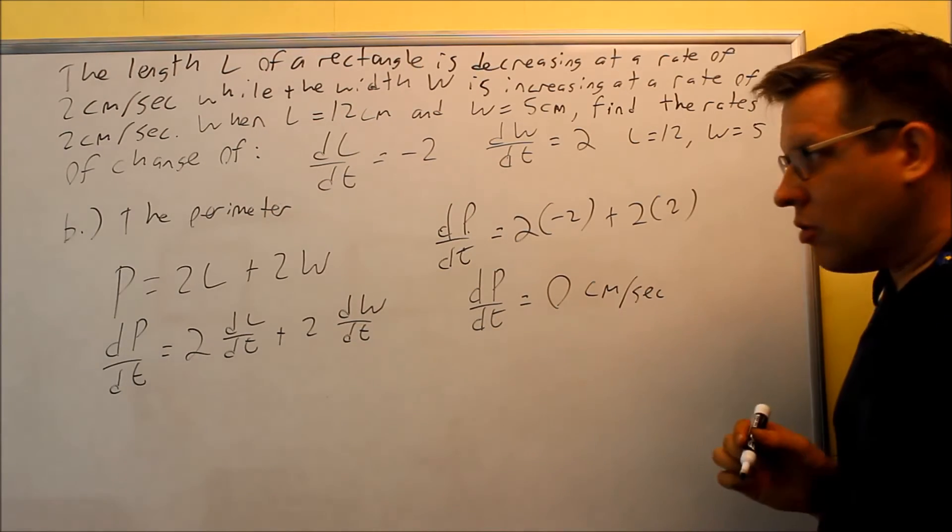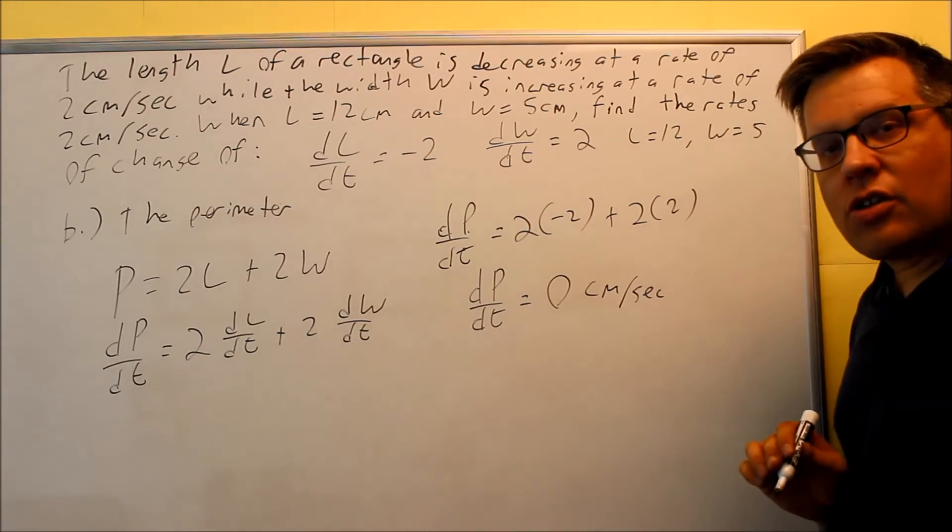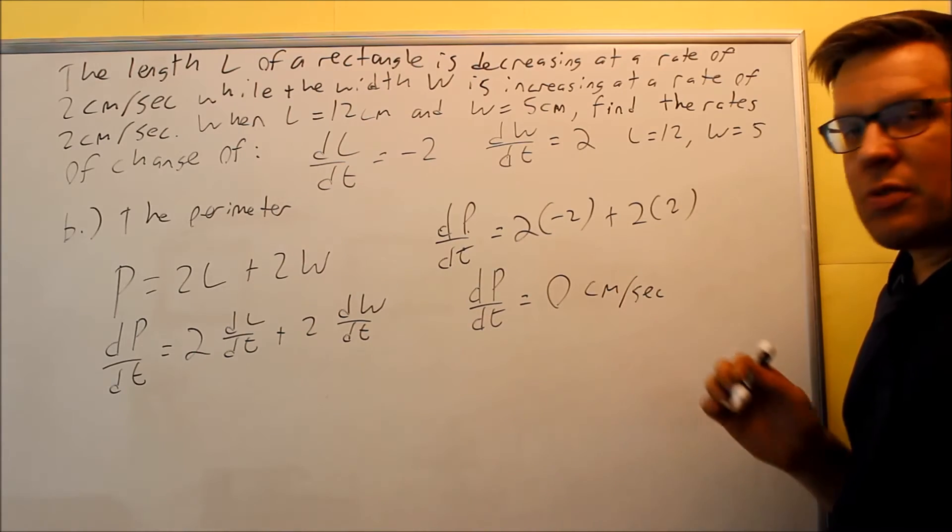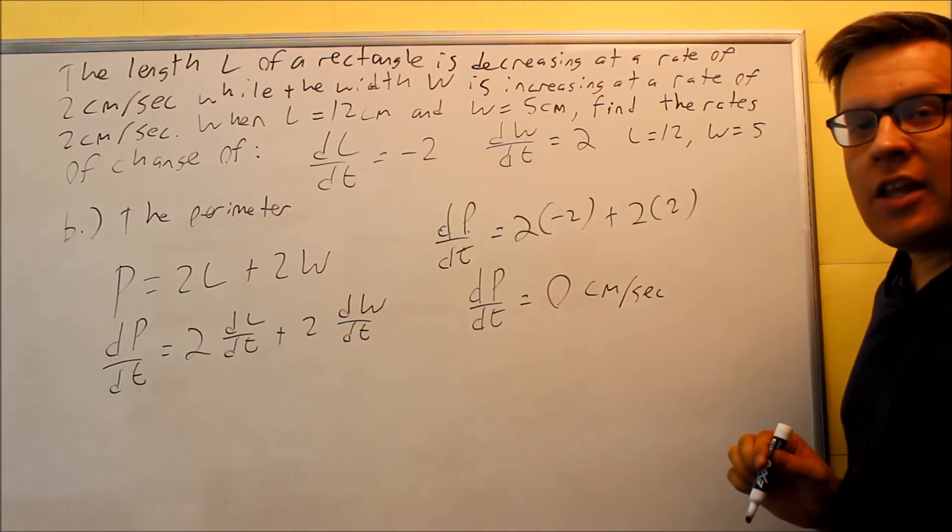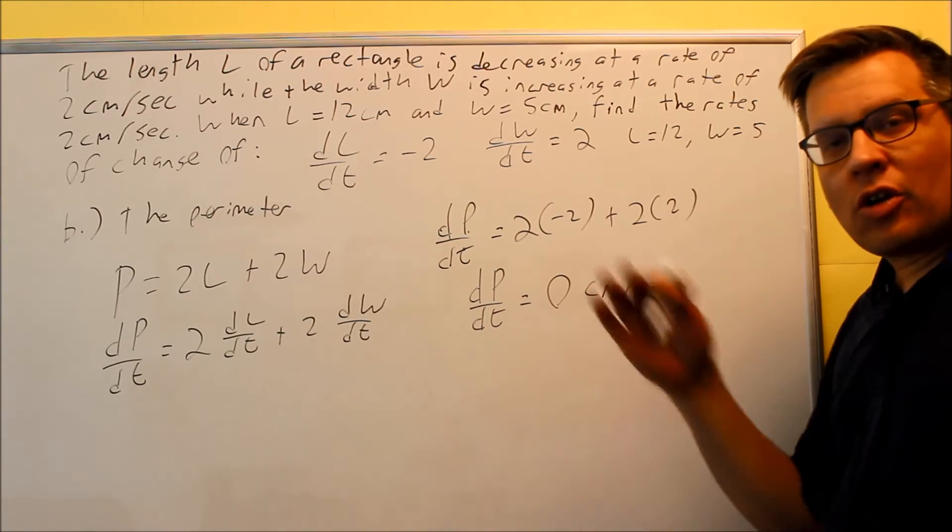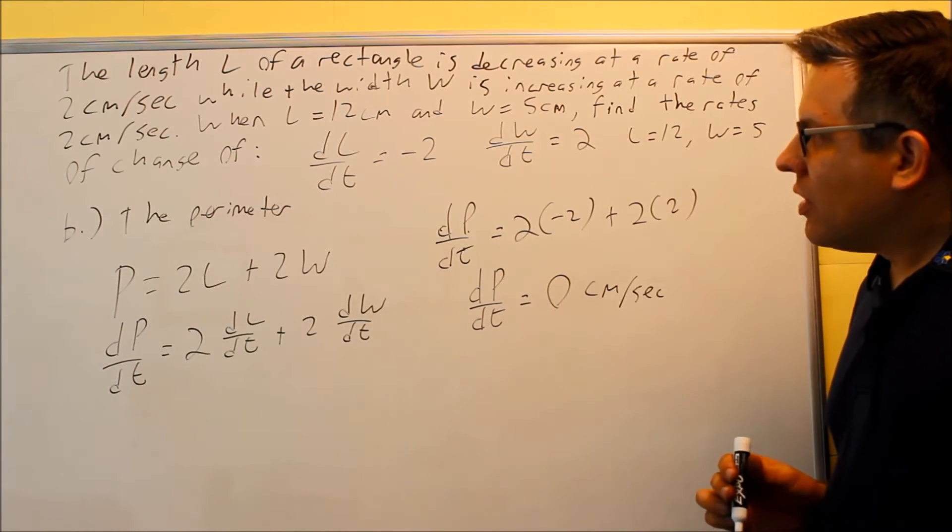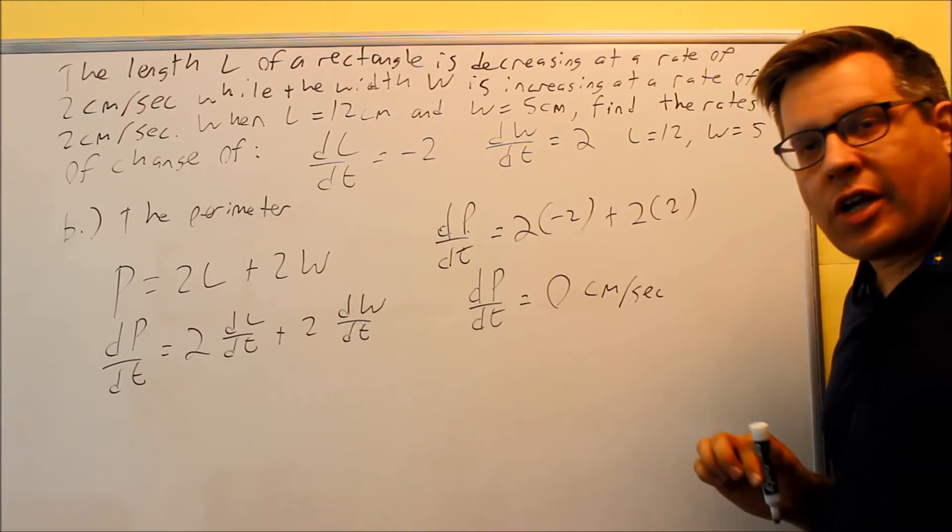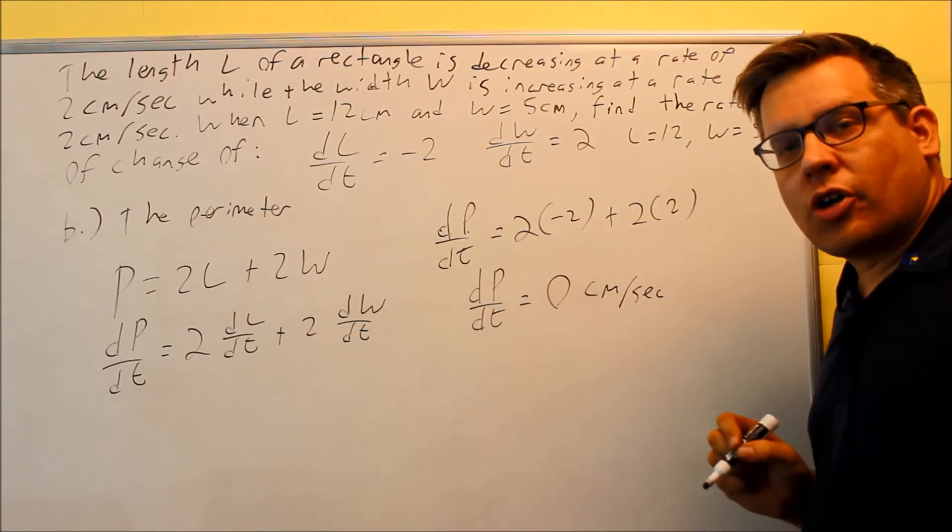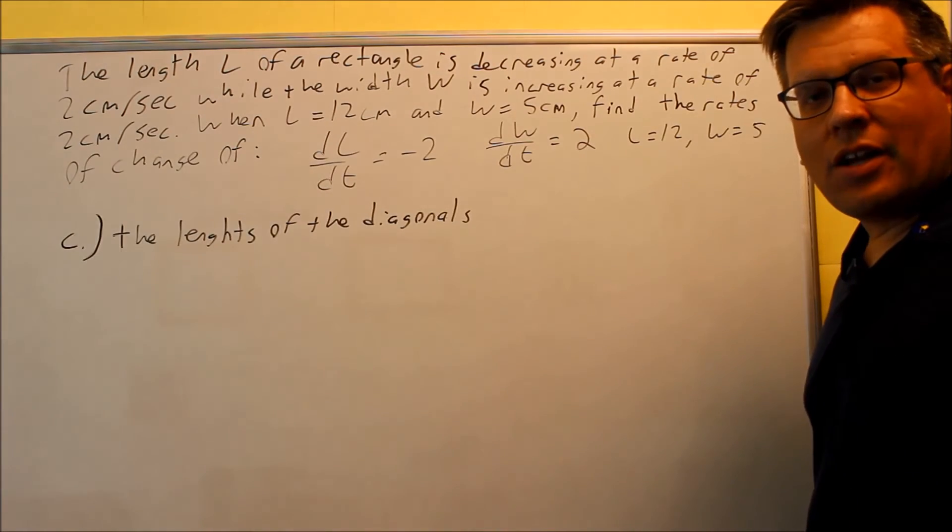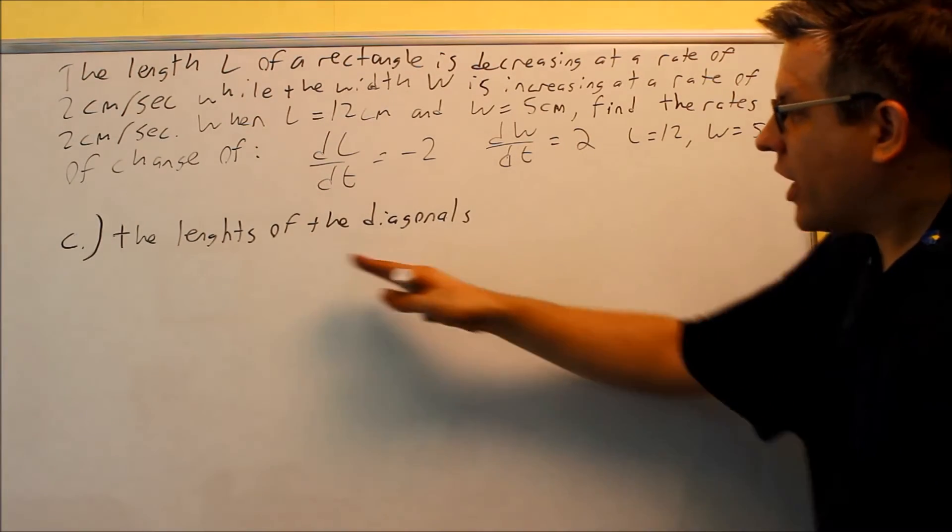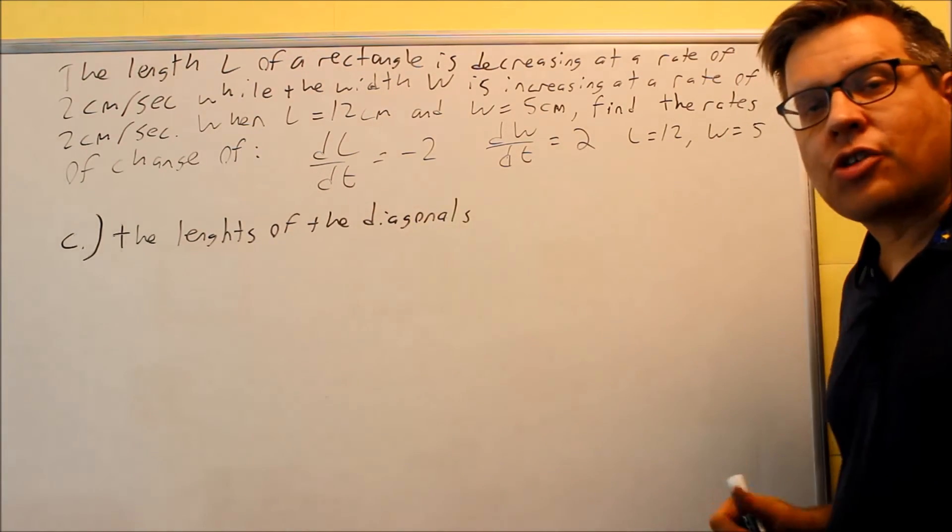So what's that mean? I get 0. That means nothing's changing at all. And that makes sense because if you're decreasing the length and at the same time increasing the width, that means that everything's basically going to be balancing out, which means that there's no change at all here. The perimeter is not changing, it's going to be constant. Now for part C, they want to find the rate that the lengths of diagonals are changing with respect to time.